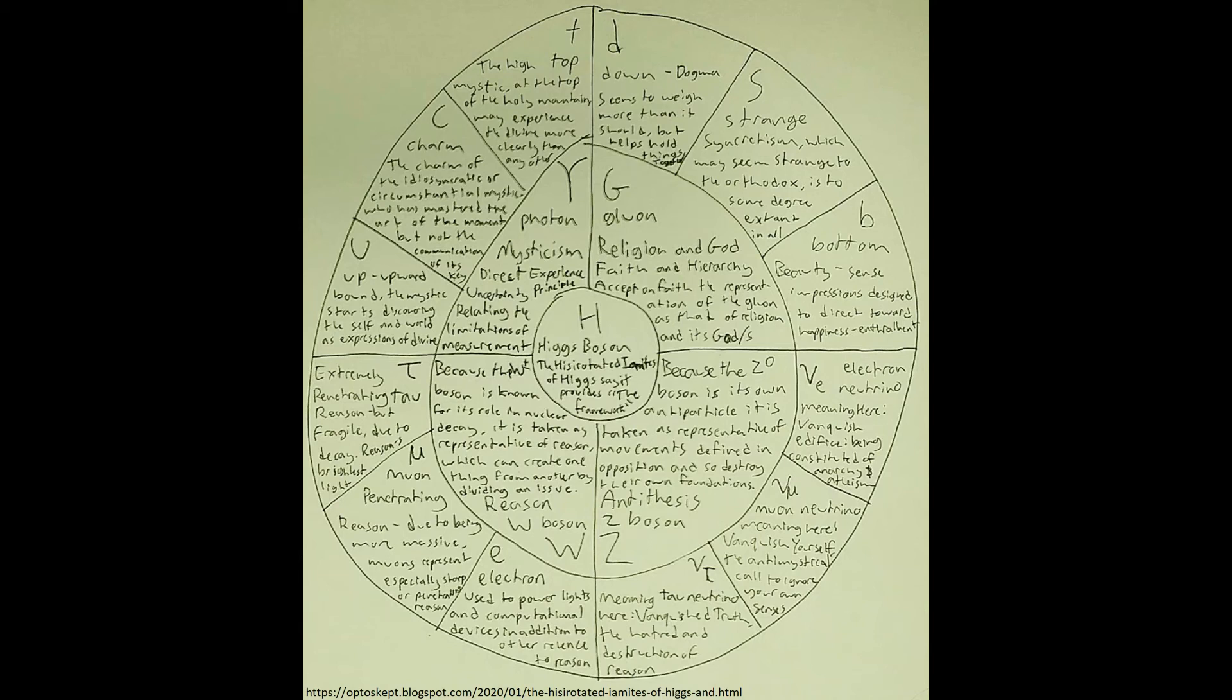Finally, finally, the Higgs boson. Sometimes, often to the irritation of serious scientists, it has been called the God Particle. Admittedly this label was likely originally a publicity stunt to help raise the money needed to prove that it existed, but this fact serves the Hisirotated Iamites of Higgs, because in this chart God(s) have already been given a section, and it is not the Higgs. Heresy? Heresy? I hear the cry. But wait, could it mean holy? And the answer, then, is sort of, insomuch as humanists consider holiness.